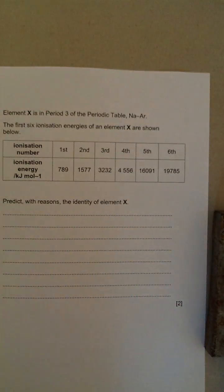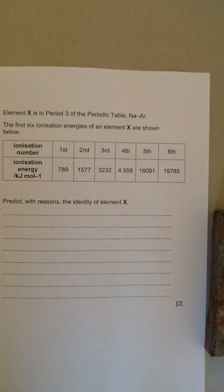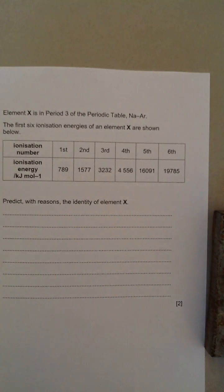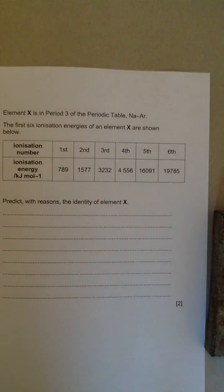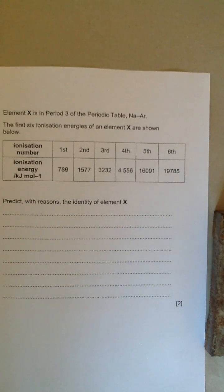This is the typical type of question you would get, for example, at the end of a periodicity question or an ionization energy question. It says element X is in period 3 of the periodic table from sodium to argon. The first six ionization energies of element X are shown below.